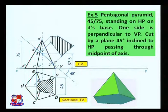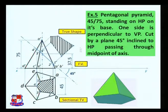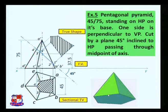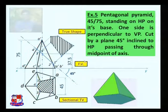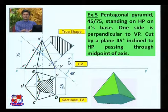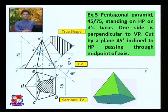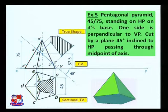Draw section lines at 45 degrees to the inclined cutting plane to complete the true shape. This shows the true shape of the section. The front view, sectional top view, and true shape for the pentagonal pyramid are now complete. Insert dimensions: 75, 37.5, and 45 millimeters. This carries seven marks: two for the front view, three for the sectional top view, and two for the true shape of the section.